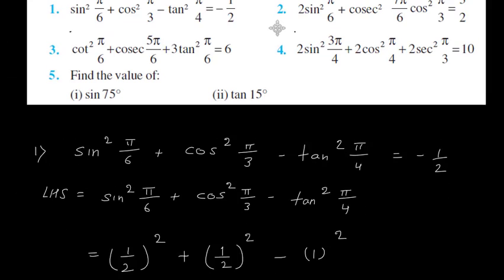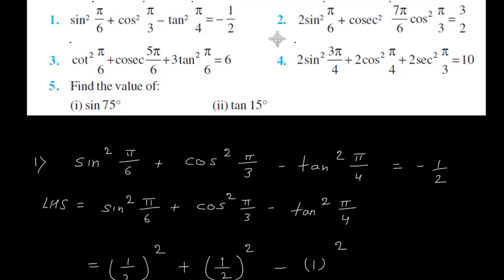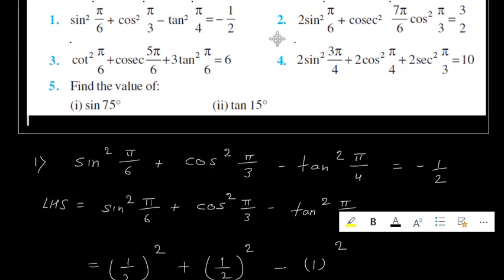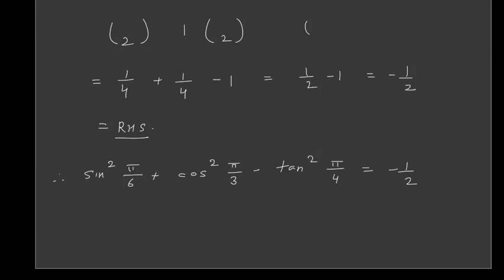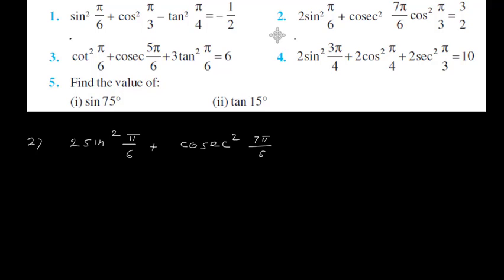Now let us see the second question. It is 2 sin square pi by 6 plus cosec square 7 pi upon 6 into cos square pi by 3, and we have to prove that this is equal to 3 by 2.